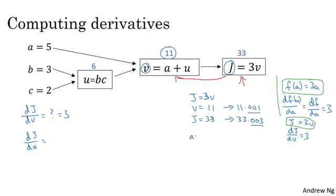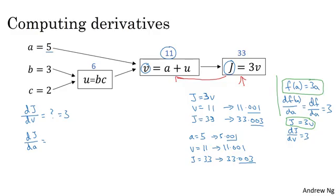If we bump up the value of a, how does that affect the value of j? Right now a is equal to 5, so let's bump it up to 5.001. The net impact of that is that v, which was a plus u, so previously 11, would get increased to 11.001. And then we've already seen that j now gets bumped up to 33.003. So if you increase a by 0.001, j increases by 0.003, and the increase in j is three times the increase to a, so this derivative is equal to 3.